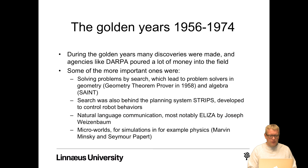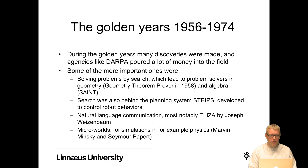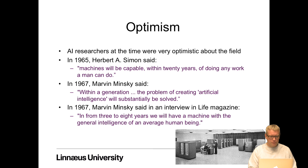It started off as the first golden years in AI from 1956 to 1974. During this period many discoveries were made and agencies like DARPA poured a lot of money into the field. Important discoveries included solving problems by search — leading to problem solvers in geometry, and planning systems like STRIPS developed to control robot behavior. Natural language communication, most notably ELIZA, invented by Joseph Weizenbaum, and microworlds such as physics simulations by Marvin Minsky and Seymour Papert.